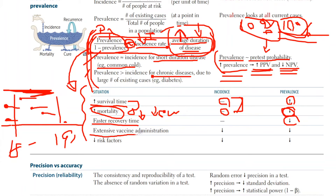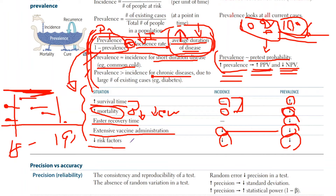With extensive vaccine administration, this will decrease the number of new cases as well as existing cases, meaning both incidence and prevalence will decrease. Similarly, decreasing risk factors — like fixing blood sugar and dyslipidemia in cardiovascular disease — decreases both the incidence and prevalence of myocardial infarction.